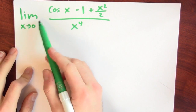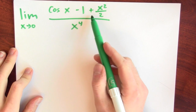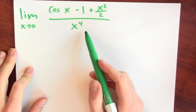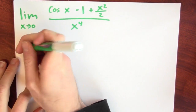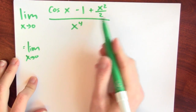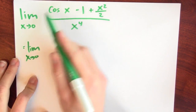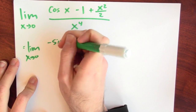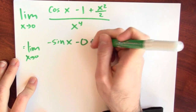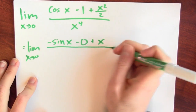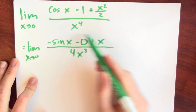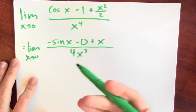Let's try to use L'Hôpital's rule in a much trickier context. Here's an example: compute the limit as x approaches 0 of cosine x minus 1 plus x squared over 2, all over x to the 4th. The limit of the numerator is 0 and the limit of the denominator is 0, so this is the sort of situation where we can apply L'Hôpital. L'Hôpital tells us to consider the derivative of the numerator divided by the derivative of the denominator. The derivative of the numerator: the derivative of cosine x is minus sine x, the derivative of minus 1 is 0, and the derivative of x squared over 2 is just x. This is divided by the derivative of the denominator, which is 4x cubed. Now the limit of the numerator is 0 and the limit of the denominator is 0, so I can apply L'Hôpital again.